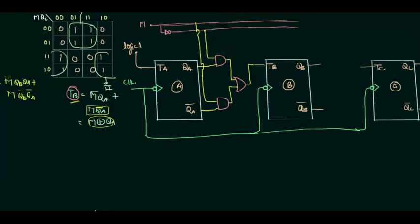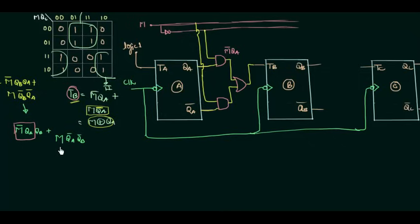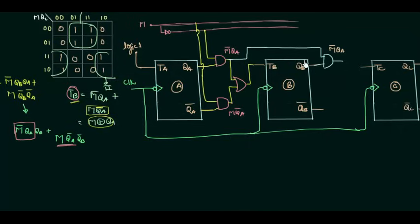For TC = M̄·QB·QA + M·QB̄·QĀ, we can reuse the intermediate signals. The output of the first AND gate, which is M complement times QA, is fed into another AND gate along with QB to produce the first minterm M̄·QA·QB. Similarly, the output M·QA complement is fed into another AND gate with QB complement. Both results go through an OR gate to produce TC.